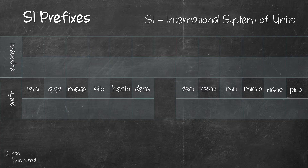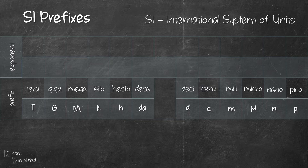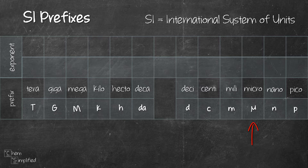These prefixes can also be abbreviated, meaning they can be simplified into some letters or symbols. You do want to pay attention to the abbreviation. Some are in uppercase like the first three — tera, giga, and mega — their symbols are capital T, G, and M. The rest are in lowercase. And for deca, it's represented by two letters, DA. For micro, it's represented by a Greek letter that looks like a U with a tail in the front.